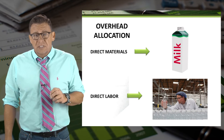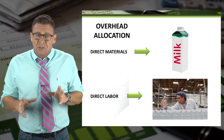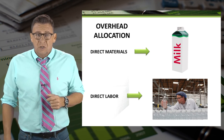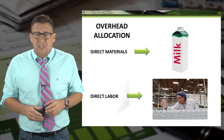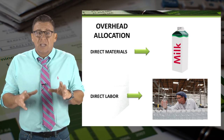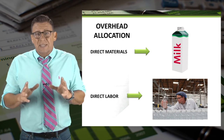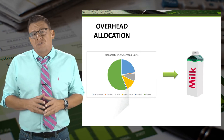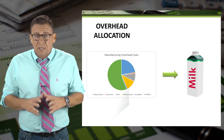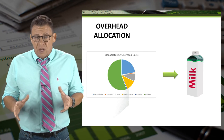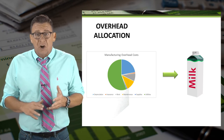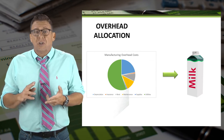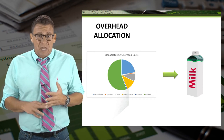Direct materials is a concept most understood because they end up in the product or product packaging. Direct labor is also fairly understandable because it's a labor cost used to directly assemble and manufacture the products. Manufacturing overhead is slightly more complicated. In short, it is all the costs of a manufacturing plant that aren't either direct materials or direct labor. Examples include depreciation, utilities, maintenance, and supplies.